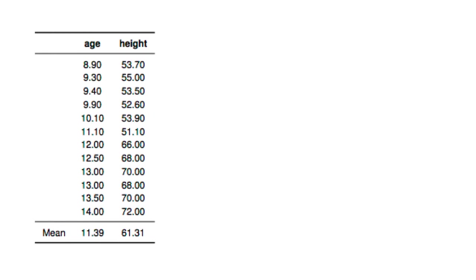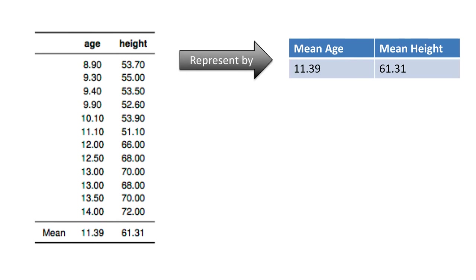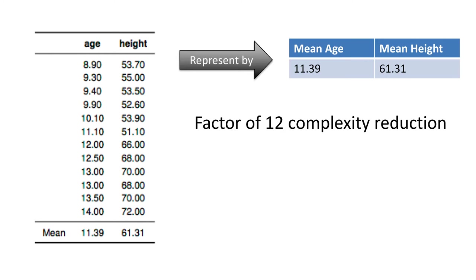Take a concrete example: a small dataset of 12 students with age and height. We have the 12 data items and compute the mean age and mean height. It is possible to represent this entire set by just the mean age and the mean height — instead of thinking of 12 objects, I can say I've got a set whose mean age is 11.39 and mean height is 61.31. Representing the whole set by its mean achieves a factor of 12 in complexity reduction.